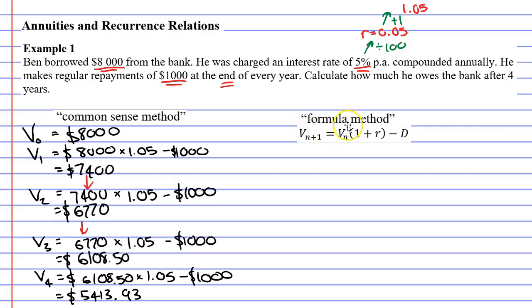So we're now going to look at our formula here. And we're going to see how it relates to the common sense method. So I'm going to start by writing it down the way they've written it. V, N plus 1 equals V with a subscript of N. I know what R is and I know what capital D is. Lowercase r is 0.05. And capital D is our repayment, $1,000. So I'm going to replace them. I'm going to go 1 plus r, 0.05, in brackets. And I'm going to subtract my repayment of $1,000.